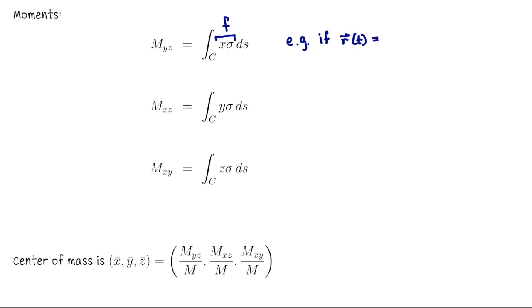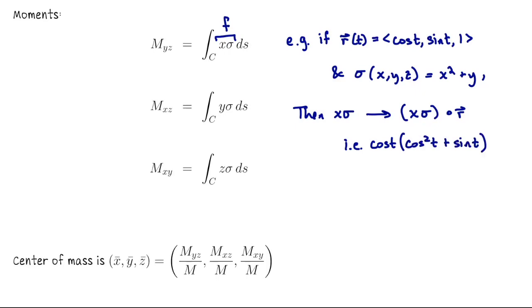To write that out, if r of t is cosine t sine t 1 and sigma of x, y, and z is x squared plus y, then x sigma needs to be x sigma composed with r, which means you need to do the x coordinate of r, so cosine of t times sigma of r. So cosine squared plus sine. I'll leave our discussion there. Thank you for your attention.